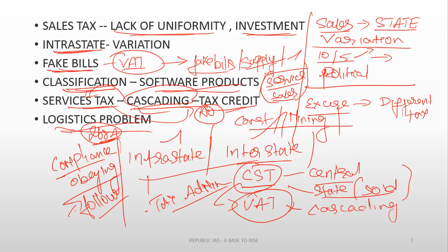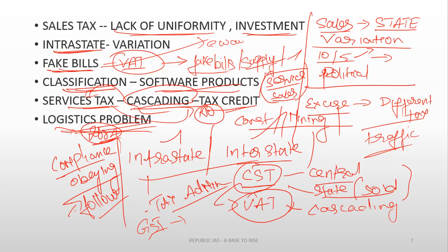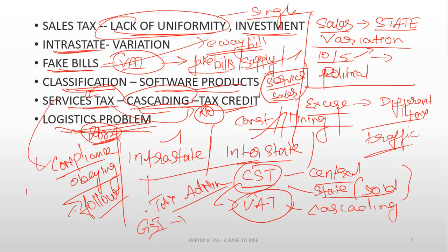Tax administration was also difficult due to state law variation and multiple complexities. There was also logistical hecticness — for inter-state product trade, lorry drivers had to stop at check posts, get signatures, and pay tax, causing huge traffic at check posts. GST addressed all these issues. For fake bills, the e-way billing system was introduced. The multiplicity of taxes was removed. Even services now have input tax credit. Sales tax variation is eliminated in GST. All the prevailing issues were mitigated through GST.